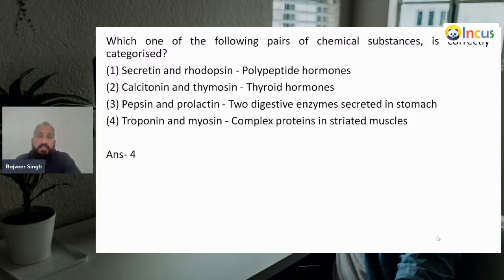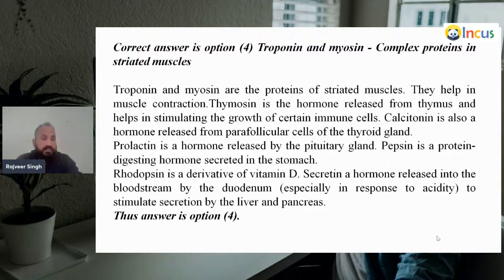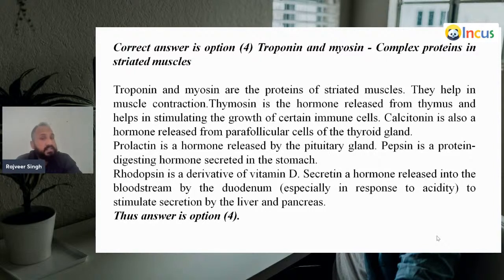Among these, the correctly matched answer is the fourth option. Why do we choose troponin and myosin as complex proteins in striated muscles? Because troponin and myosin are the proteins of striated muscles — they help in muscle contraction first of all.